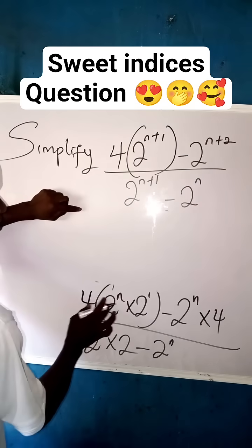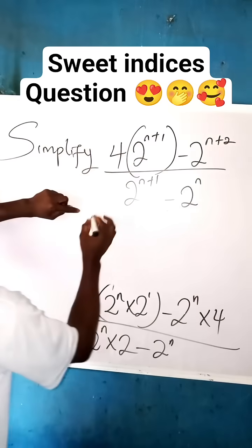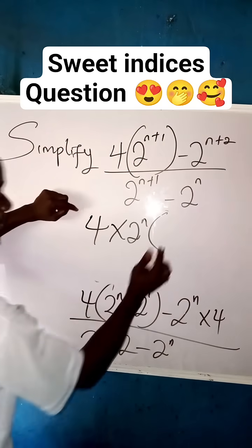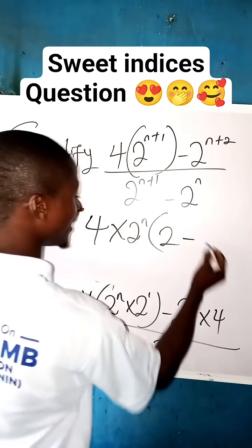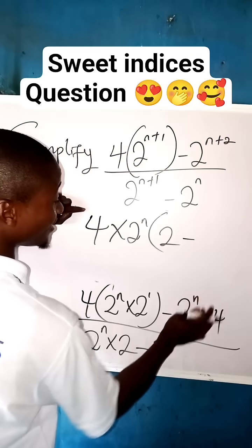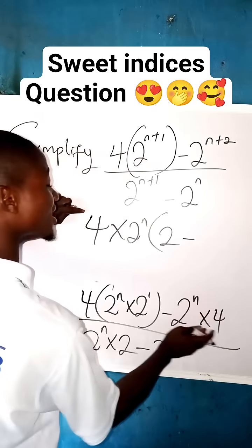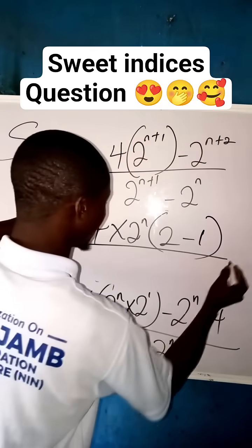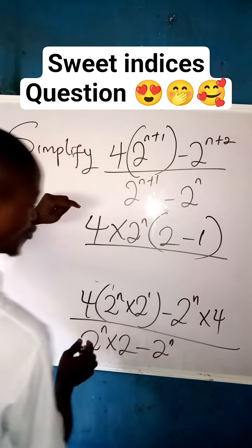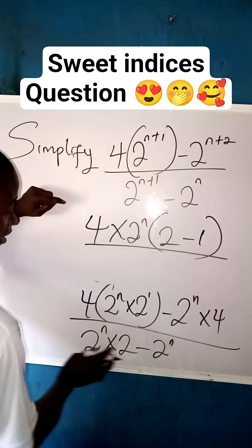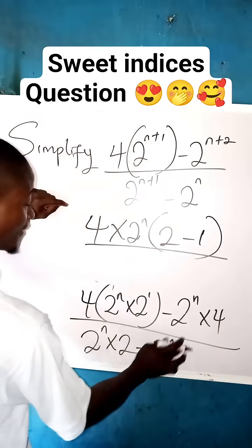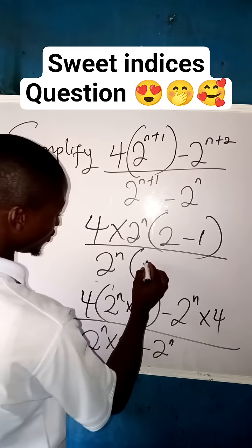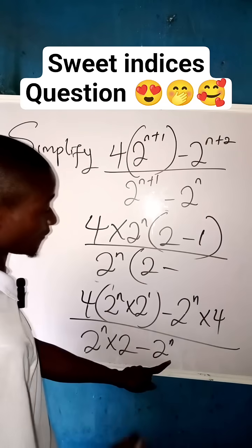If you factor out 4 times 2 to the power of n, we bring 4 times 2 to the power of n. If we remove it from the first term, what remains is 2. Then minus — we remove 4 times 2 to the power of n from 2 to the power of n times 4, and we're left with 1. Then all over: here also, when we factor out between the denominator terms, what is common is 2 to the power of n. We factor out 2 to the power of n — from the first term remains 2, then minus, from the second term remains 1.